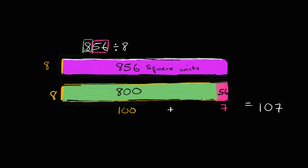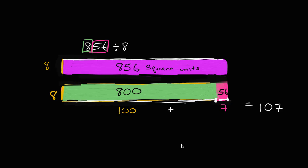So once again, you could have said: eight goes into 800 a hundred times, eight goes into 56 seven times — 107. Why draw these rectangles? Just so that it's sometimes helpful to visualize this — hey, this is an area problem. If 856 is the total area and eight is one of the dimensions, then 856 divided by eight is going to be the other dimension. When you're breaking this up by place value, you're breaking the numbers into pieces that are easier to divide by eight. You can think of it as breaking up that area and finding parts of this length — 100 right over there, and then seven. Hopefully this broadens your visualization capabilities when you're doing division.